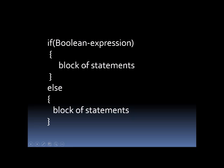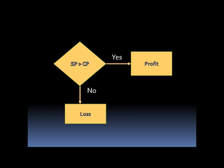We'll take an example wherein we'll input the cost price and selling price of an article and print whether the seller has made a profit or loss. In the flowchart: if the selling price is greater than the cost price, then we print profit; and if the selling price is less than the cost price, then we print loss.